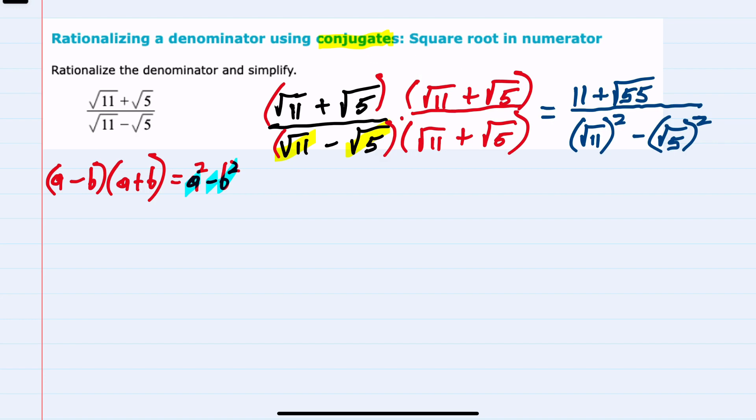Then moving to the square root of 5, doing that multiplication, again, the square root of 5 times the square root of 11 is the square root of 55. And then the square root of 5 times the square root of 5 is the square root of 25, or just 5.